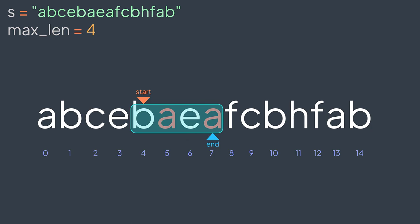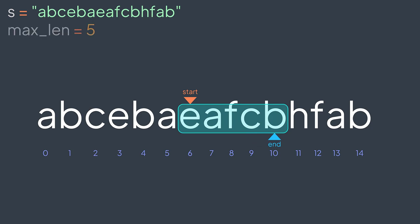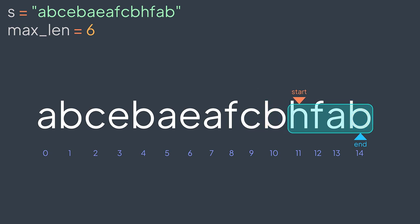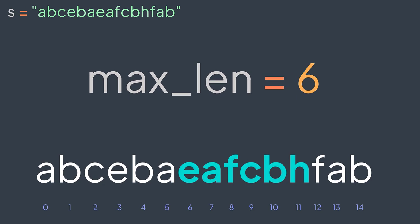Continuing: the next character is repeated at index five, so we put start at index six — substring of length two, doesn't replace. Then no repeating, length three; no repeating, length four; no repeating, length five — replaces; no repeating, length six — replaces. Then f is seen before at index eight, so we put start at index nine — length four, doesn't replace. Next: no repeating, length five, doesn't replace. Last iteration: b is already in our substring at index 10, so we put start at index 11 — length four, doesn't replace. We finished traversing all of string s and found the longest valid substring has length six: e, a, f, c, b, h.